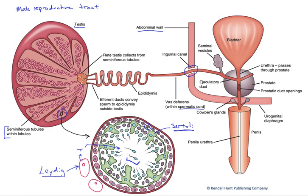Those sperm pass through the lumen as they develop and exit through a convoluted structure of tubes called the rete testis, into the efferent ducts that exit the testis. We then end up in a singular tube called the epididymis — a highly coiled small tube that sits right on top of the testis and is about 20 feet long. The sperm are non-motile on the way in, and about a week later they are motile and functional on the way out.